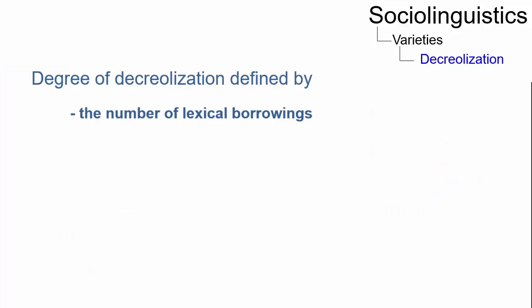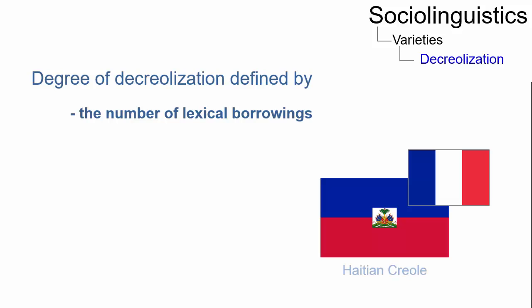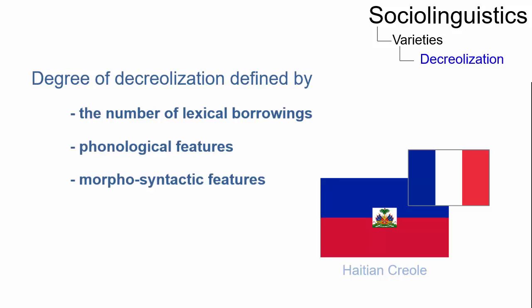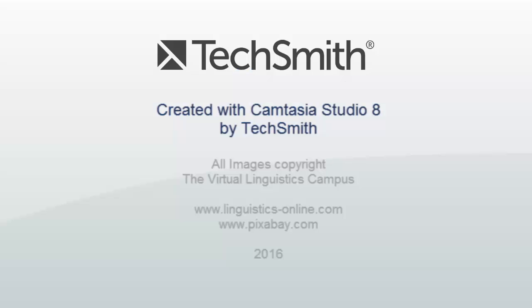In some Creoles, the number of lexical borrowings from the standard is said to show the degree of decreolization, as in the French-based Haitian Creole. More often, however, phonological and especially morphosyntactic features are affected by decreolization.